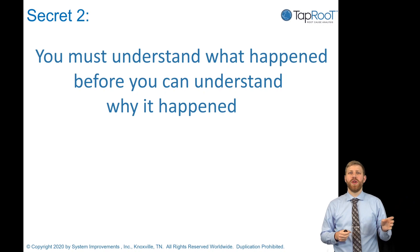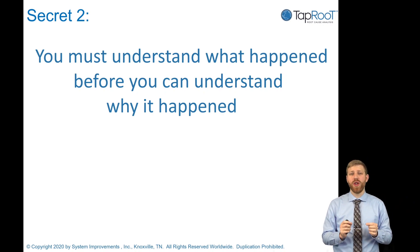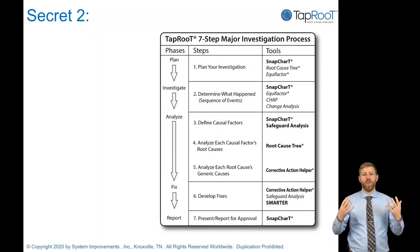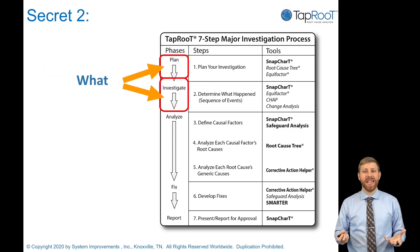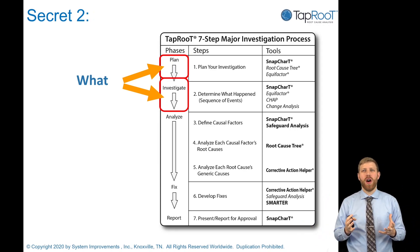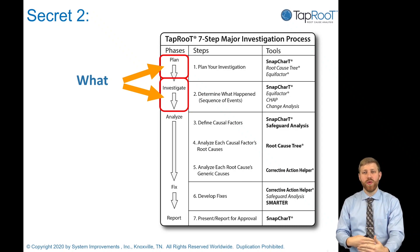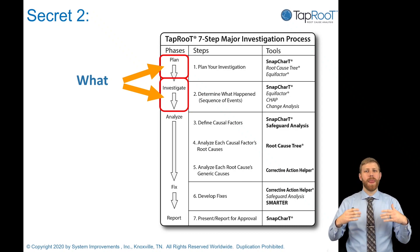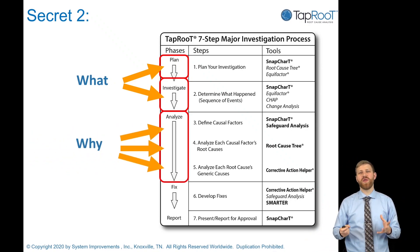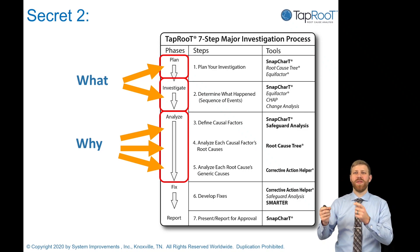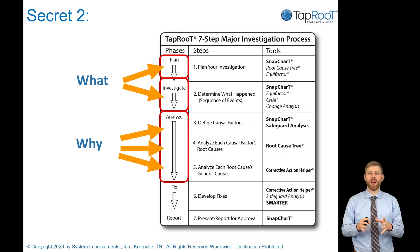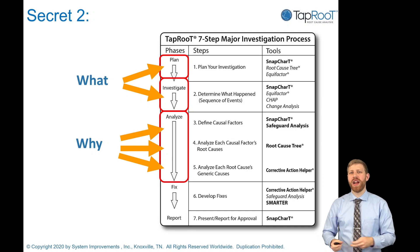Secret number two: you must understand what happened before you can understand why it happened. In Taproot, we focus on the 'what' first in our planning and investigation phase. We start by gathering information, understanding where we need to investigate, planning out who we need to speak to, where we need to go, and building out our snap chart — a timeline of events — before we start answering why, before we start identifying mistakes, errors, and failures.